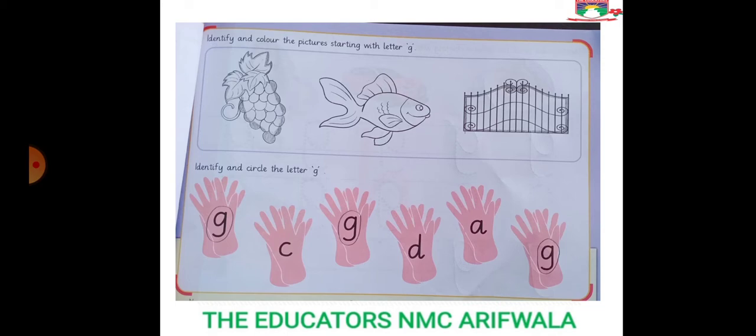What do we need to do with the letter G? We need to identify the letter G and then we need to circle it. First, we need to identify it. Is it G? Yes, it's G. And the teacher needs to circle it.